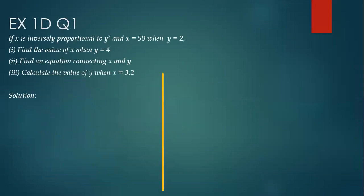Exercise 1D, question number 1. If x is inversely proportional to y-cubed and x is 50 when y is 2, find the value of x when y is 4. Find an equation connecting x and y, and calculate the value of y when x is 3.2.